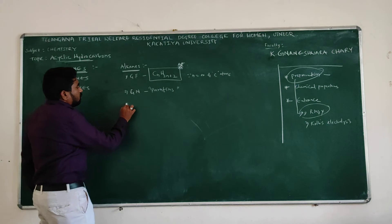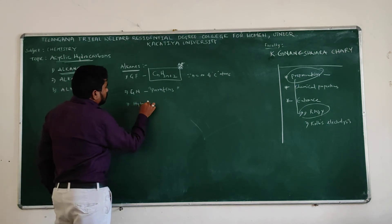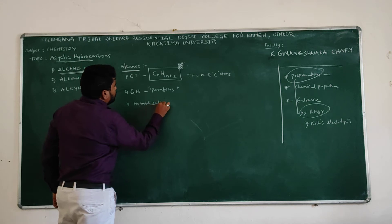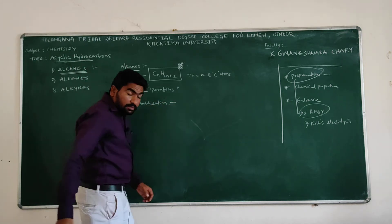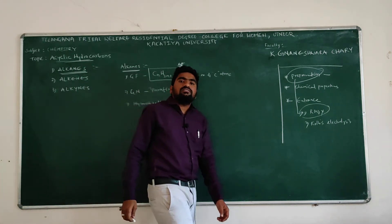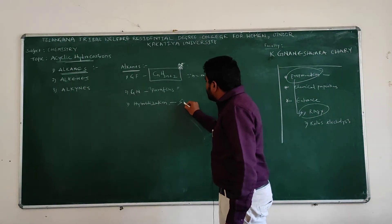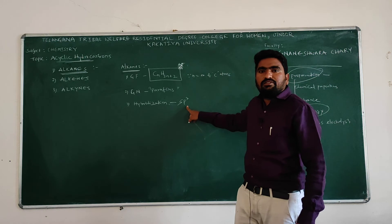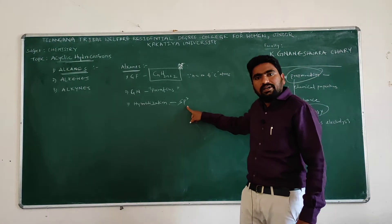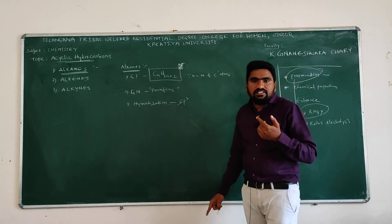What is the hybridization of alkanes? The hybridization of alkanes is sp3. For alkenes the hybridization is sp2, and for alkynes the hybridization is sp.